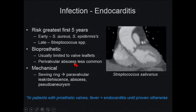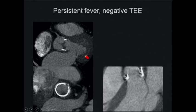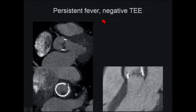Here's a case where the patient was transferred for a negative transesophageal echocardiogram despite fever and bacteremia. On our gated CTA, there's clearly a nodule on the ventricular side — more common for vegetations. This was another case of endocarditis. It's been reported that CT can be up to 97% sensitive for detection of endocarditis.